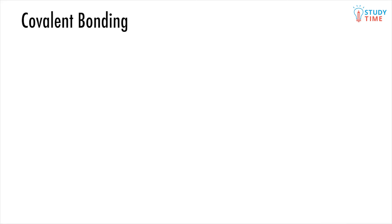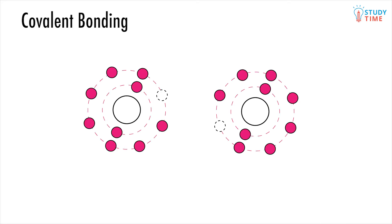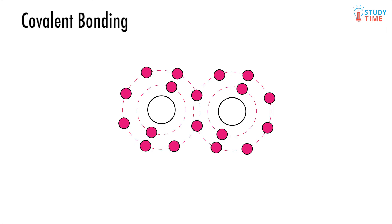Alternatively, atoms can share electrons so they both have full valence shells. It is easy to understand this as a kind of Venn diagram, where one atom has some electrons, the other has some electrons, and in between them are electrons that are shared, that are counted in the valence shell of both atoms. We will go through how this works now.